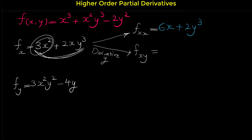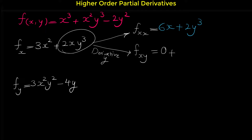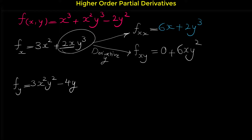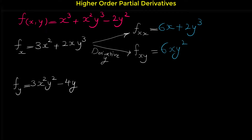The derivative of 3x squared with respect to y is 0. For the derivative of 2xy cubed with respect to y: 2x is a constant coefficient for y cubed, so we bring the power 3 to the front and multiply: 3 times 2 gives 6xy squared. So f sub xy equals 6xy squared.